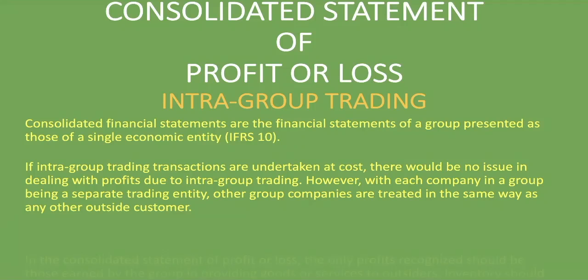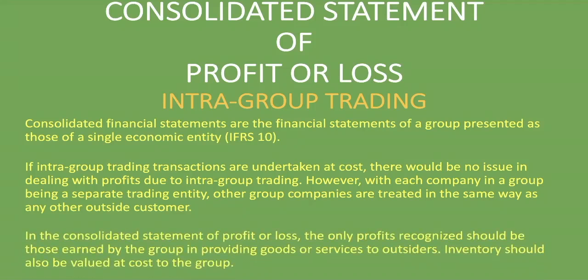In the consolidated statement of profit or loss, the only profits recognized should be those earned by the group in providing goods or services to outsiders. Inventory should also be valued at cost to the group — that's very important. When dealing with intragroup trading, ask yourself how much the goods were brought in for from outside the group. That will be the cost to the group, not how much one company within the group bought from another.